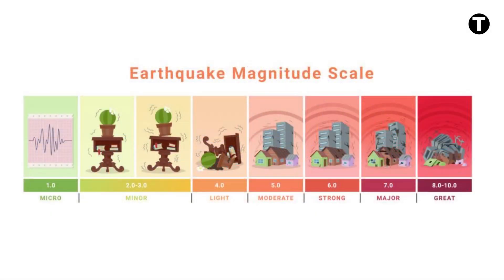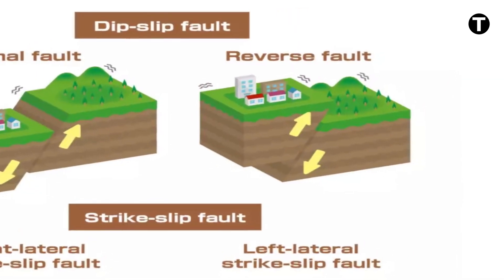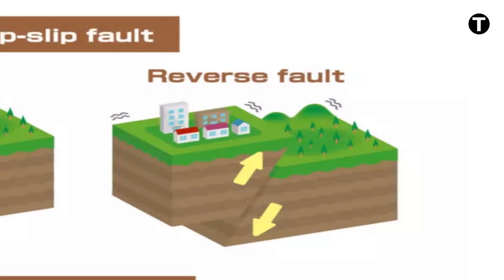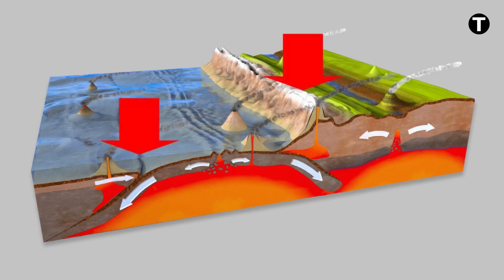Earthquakes linked with normal faults generally have a magnitude less than 7. The reverse fault is the opposite of the normal fault — the block above the fault moves up relative to the block below. Reverse faults occur in areas where the crust is being shortened, like at convergent boundaries. These faults, particularly those along convergent plate boundaries, are associated with the most powerful earthquakes.